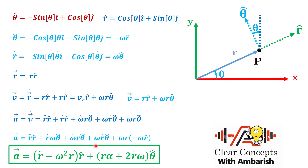This is a very important formula. To memorize it: if the particle were moving in a circle of fixed radius, r dot and r double dot would be zero, reducing to the simple circular motion formula: minus omega squared r times r cap plus r alpha times theta cap. For general motion with variable radius, two extra terms appear — r double dot (from the changing radial speed) and the centripetal term minus omega squared r in the radial direction.